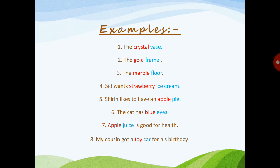'The marble floor' — what kind of floor? Marble. Always ask 'what kind of.' 'Strawberry ice cream' — what kind of ice cream? Strawberry. So 'strawberry' is a noun acting as an adjective and 'ice cream' is just a noun. 'Shirin likes to have an apple pie' — what kind of pie? An apple pie. 'The cat has blue eyes' — how are the eyes? The eyes are blue.